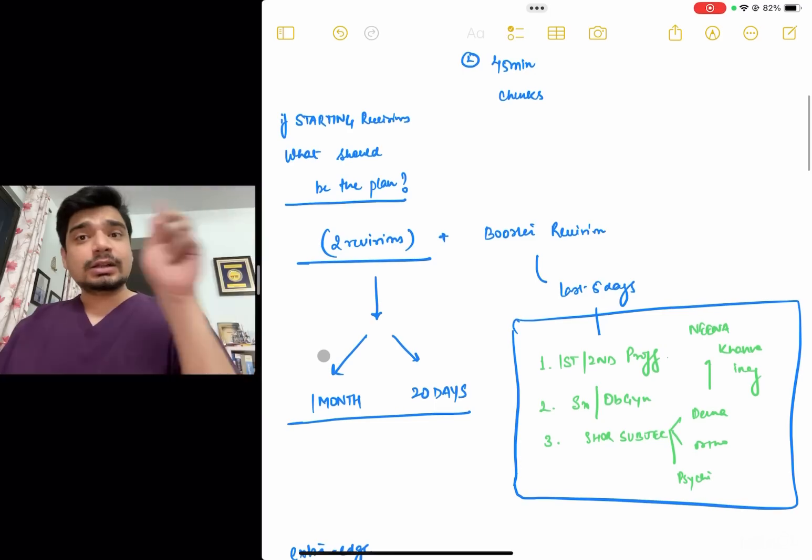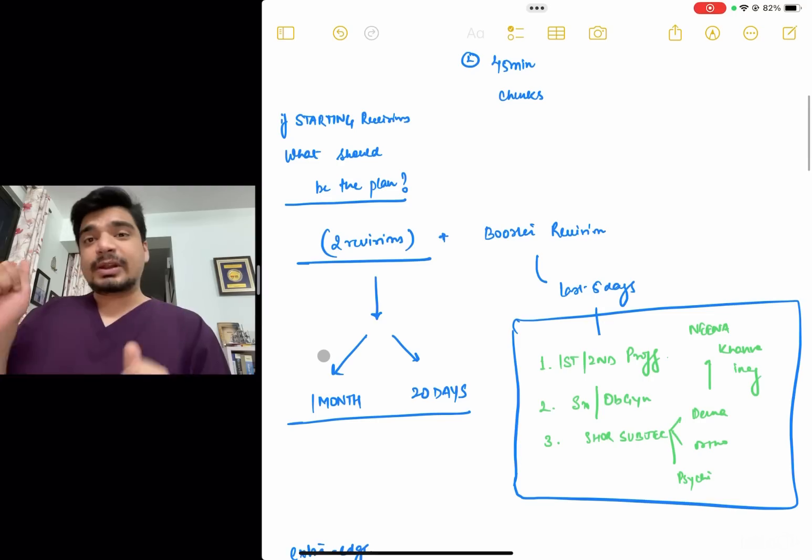How many revisions should you target till the May 19th when the exam is actually planned? I would say two revisions plus the booster revision. By two revisions, I mean that one revision should be done in around 30 days, another revision in 20 days. And since 55 days are left, only one final five day revision.